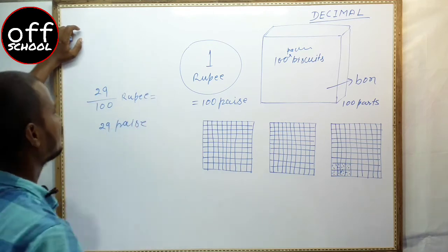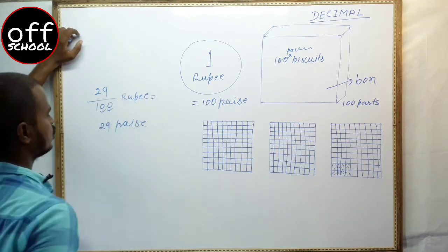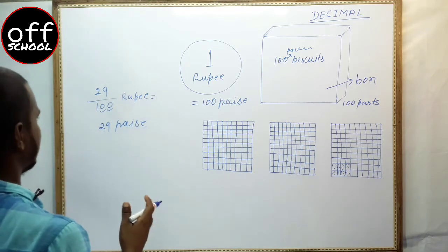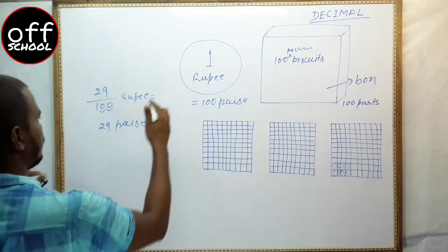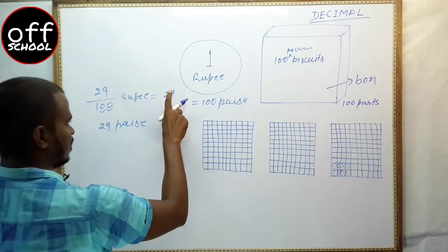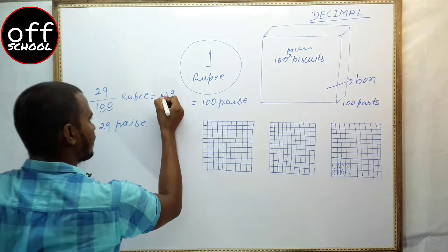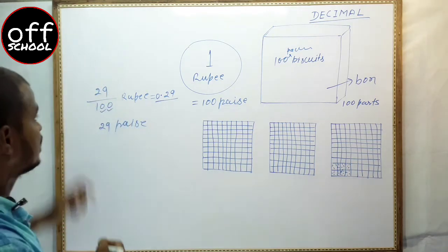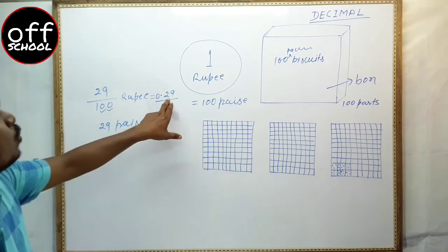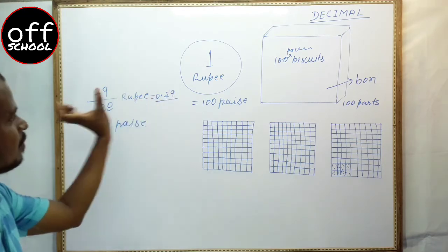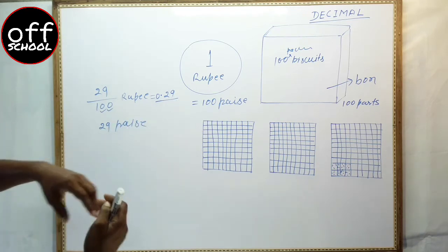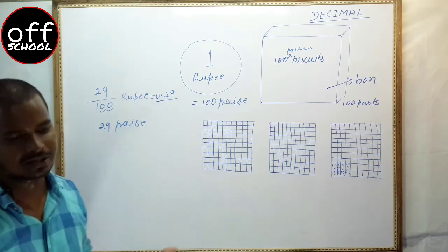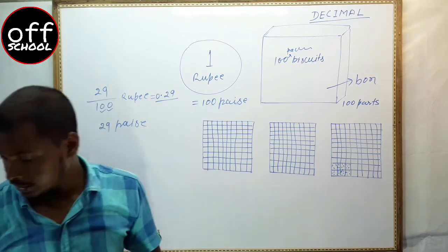If you want to write 29 by 100 in decimal form, you can see there are 2 zeros in the denominator, so you have to put the decimal point after two digits from the right side. The first digit is 9 and the second digit is 2, so you put the decimal point here and add a 0 before it. So 29 by 100 rupee equals 0.29 rupee. Both represent the same part. In terms of paise you simply write 29 paise. This was the concept of decimal and its relation to fraction.